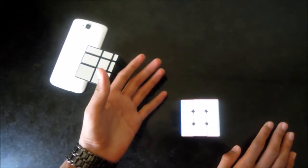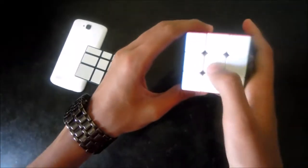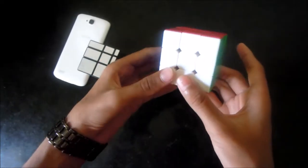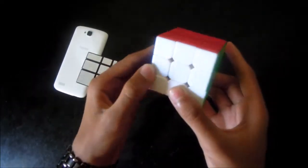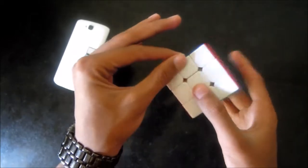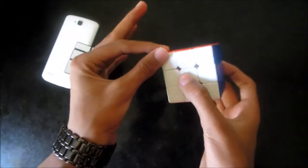So firstly I will like you to know some basics about it. This is the center piece. It never changes its position. These are the edge pieces and these are the corner pieces.